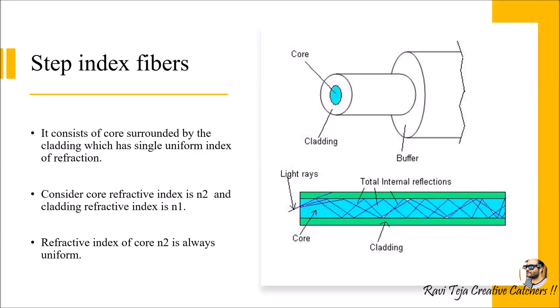Optical fibers are classified into two types based on refractive index: step index fibers and graded index fibers. Looking at the diagram for step index fiber, this is a basic block diagram of an optical fiber where you can see the top layer called the buffer or plastic coat, and inside it the cladding, and inside the cladding the core. The core is n2 and cladding is n1, where the refractive index of core is always greater than cladding.